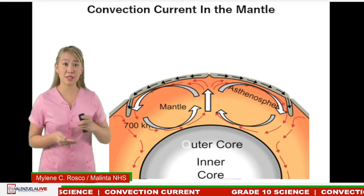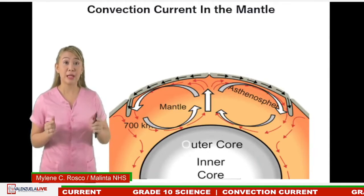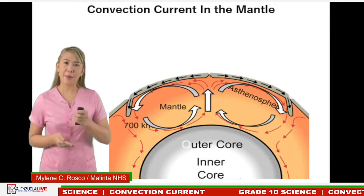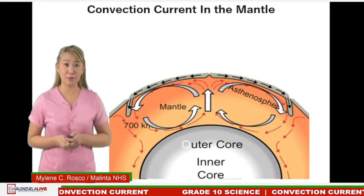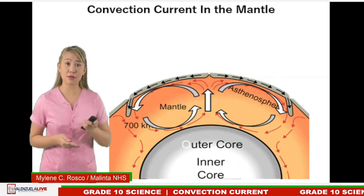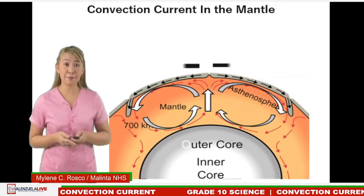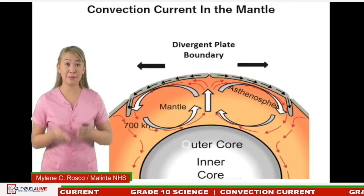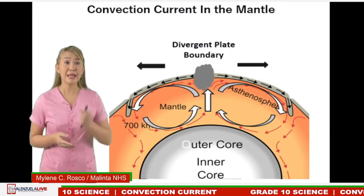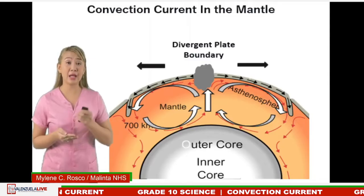The molten rocks will be heated again, become less dense, rise up, move to the side, decrease in temperature, become denser, and sink. This is how convection current occurs in the mantle. As molten rocks reach the top, they exert upward and sideward forces — lifting and splitting the lithosphere at the divergent plate boundary.